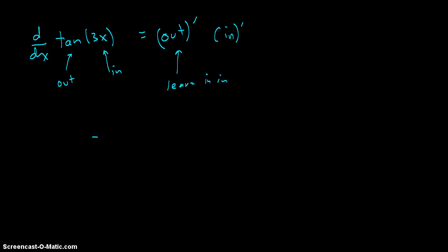So we get as our answer the derivative of the outside is secant squared. Leave the inside in, that's the 3x that is inside of the secant squared, and then times the derivative of the inside, which is 3. So secant squared of 3x times 3.